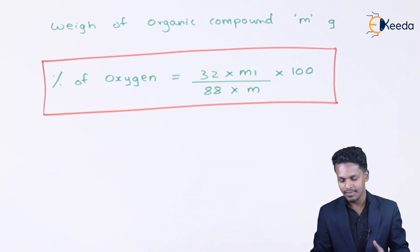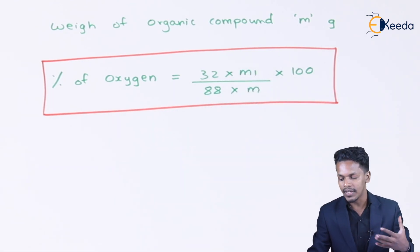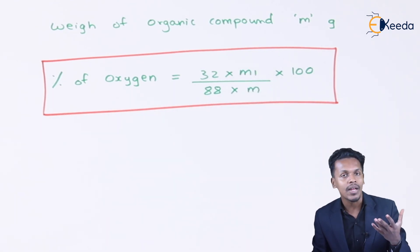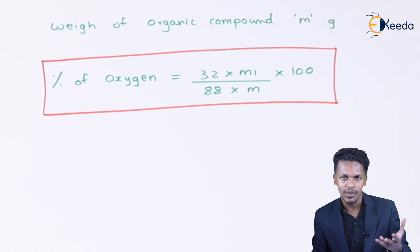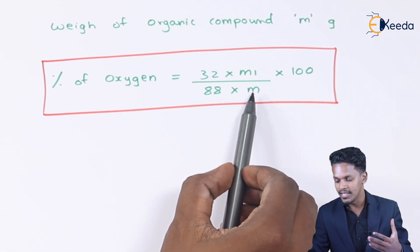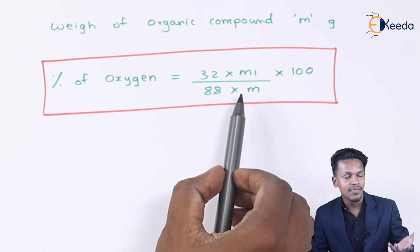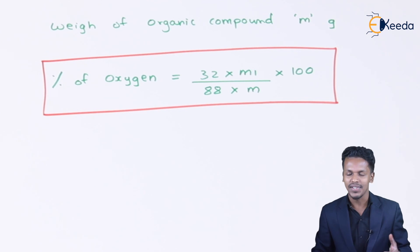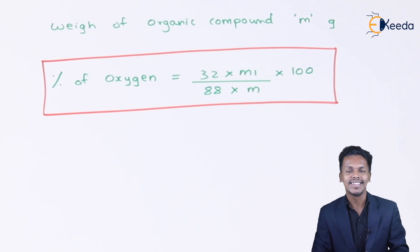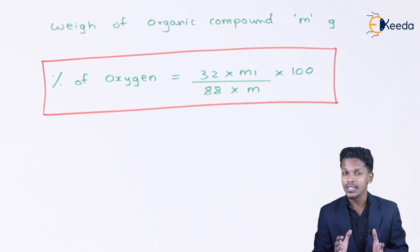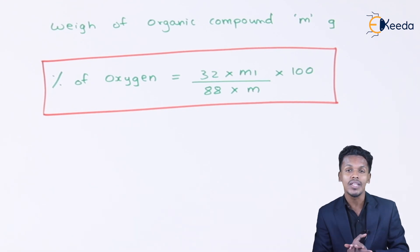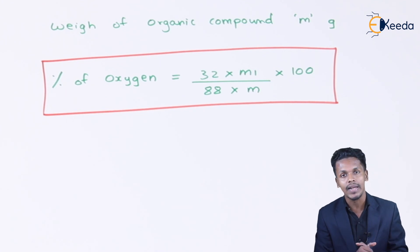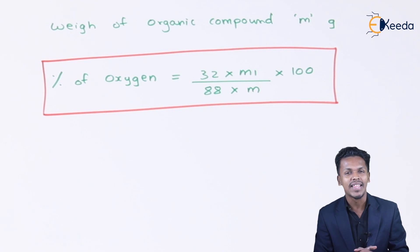To recap: M1 is the amount of carbon dioxide produced, and M is the weight of the organic compound. Using this calculation, we can easily estimate the percentage of oxygen — indirectly — with the help of carbon dioxide.